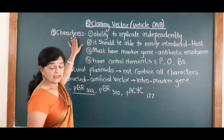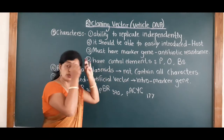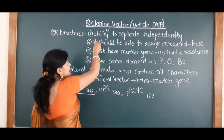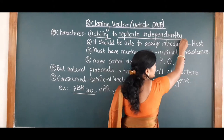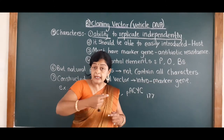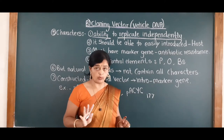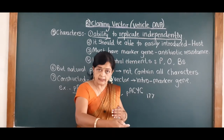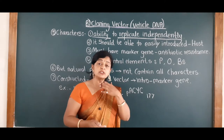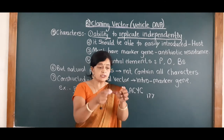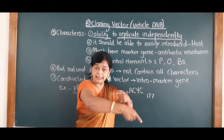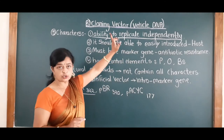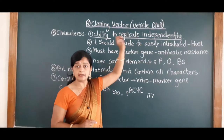Now we have to study the characters of vectors — what type of characteristics should be there in a vector. The first character is: vectors should have the ability to replicate independently. They should have the capacity to replicate automatically, independently, without anybody's support. The benefit is that as they replicate, whatever desired gene or gene of interest we have introduced in that vector will also replicate, and in a short period of time we will get the maximum number of copies of the gene of interest.